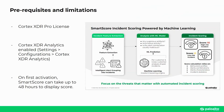There are a few prerequisites that are needed before we can start using the SmartScore feature. A Cortex-XDR Pro license is required to use SmartScore. Also, in order for Cortex-XDR to calculate the SmartScore, Cortex-XDR Analytics must be enabled under Settings, Configurations, Cortex-XDR Analytics. Upon its first activation in the Incident Configuration, SmartScore can take up to 48 hours to display a score.